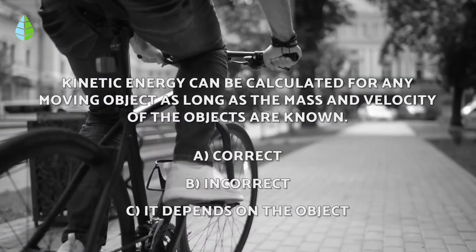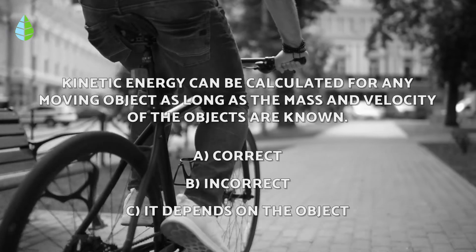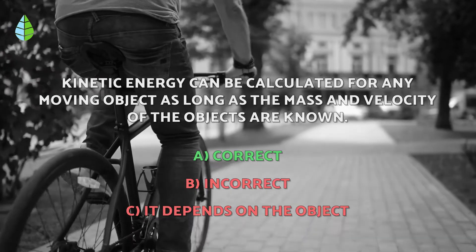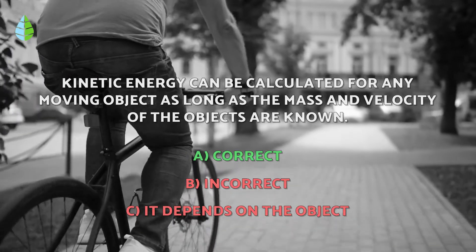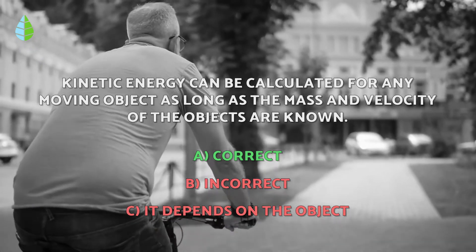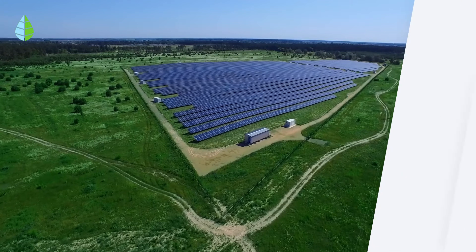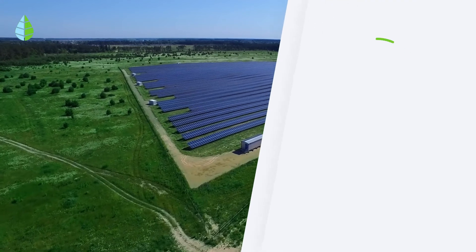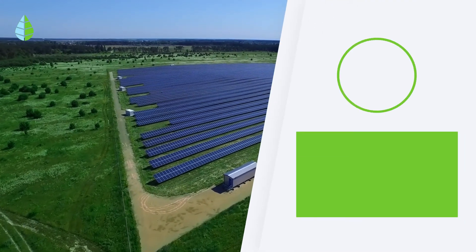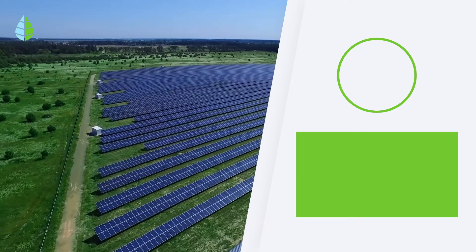Going back to the question we asked you before, do you have your answer ready? The correct answer is A, since kinetic energy is equal to the product of the mass and the velocity squared, divided by 2. If you want to continue learning more about different energy types, share your own examples of kinetic energy in the comments, and we'll see you next time.